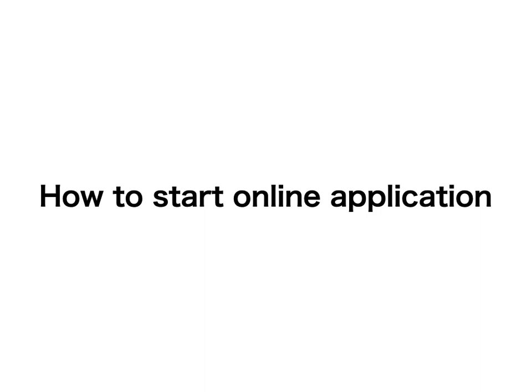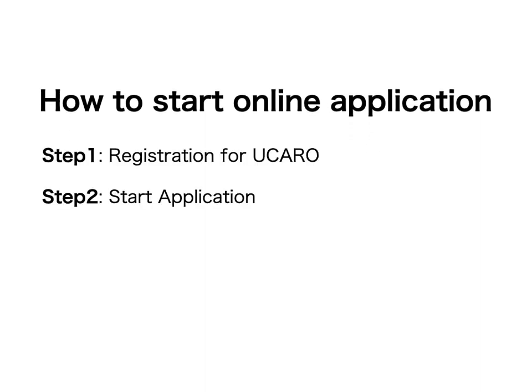In this video I will show you how to start an online application. First, all applicants need to create a Ukaro account. Ukaro is a university entrance application portal site. You can start Ukaro registration from the Hiroshima University online application system.